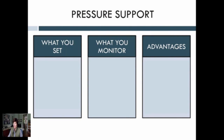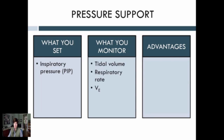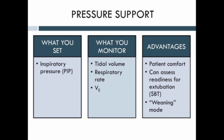What about pressure support? How is it different from pressure assist control or volume assist control? Just like pressure assist control, you set an inspiratory pressure — sometimes called the pressure support pressure. But you don't set an inspiratory time; this is the main distinction between pressure assist control and pressure support. The patient's effort determines how long the breath is. You also don't set a respiratory rate — the patient must take spontaneous breaths for every breath. You monitor tidal volume, respiratory rate, and minute ventilation. The advantage is that the patient has much more control: they determine when each breath starts and ends. Because the patient must contribute more to ventilation, it's considered a weaning mode used to assess readiness for extubation. The most important thing to remember is that the patient must have an intact respiratory drive.